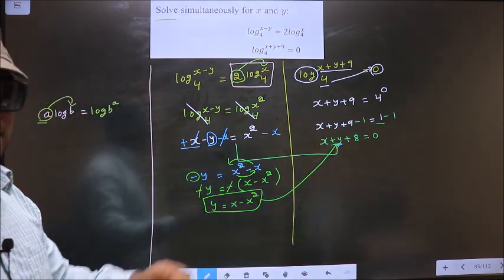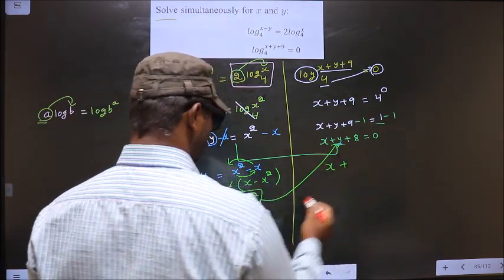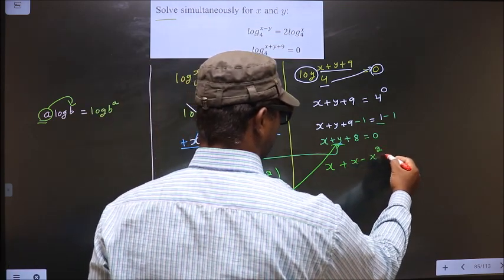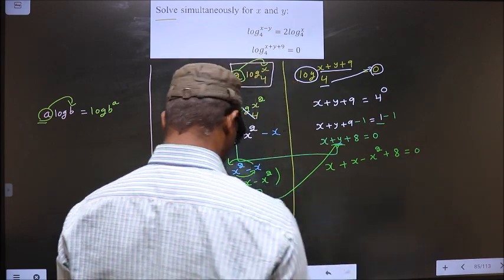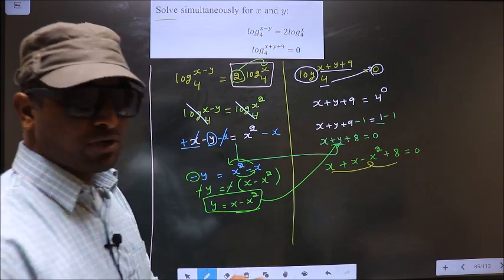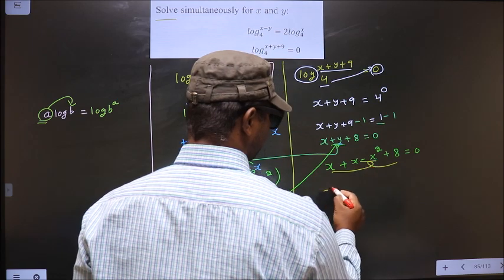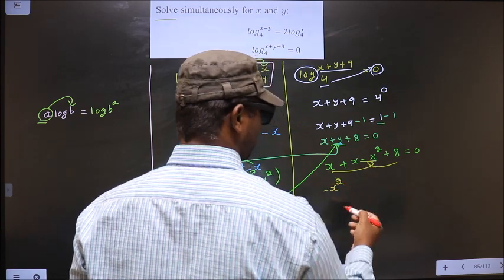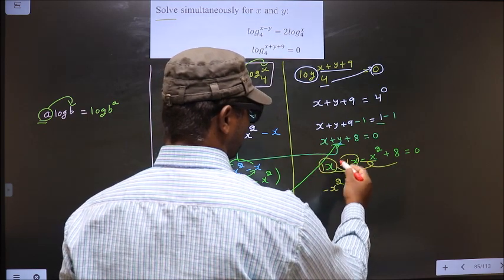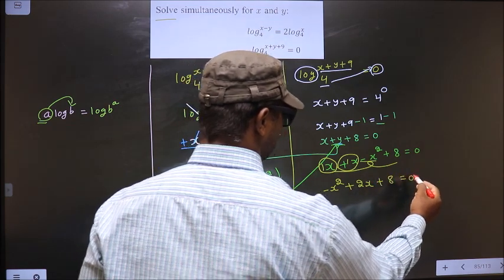Now substitute y into the other equation: x + (x - x²) + 8 = 0. I'll arrange this in proper quadratic form, starting with the x² term: -x² + 2x + 8 = 0.